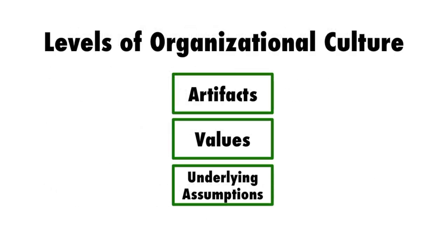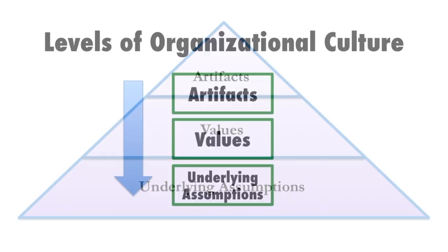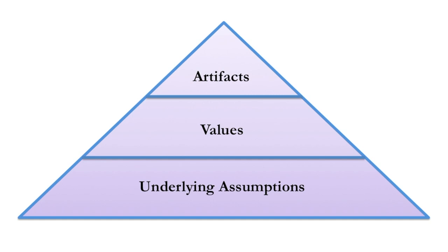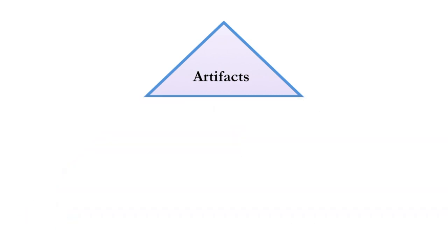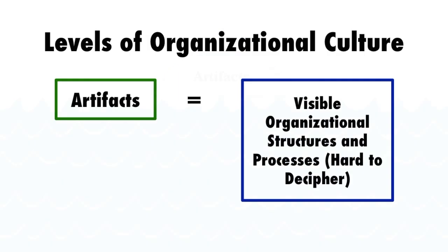The levels of culture are really the part that most people come away with from this article, because it's relatively visual and very concrete. Schein talks about how artifacts rest upon values, which rest upon underlying assumptions, and that it takes a lot of time to understand the different levels of one's own organizational culture. It's helpful to think of this as a pyramid, where the artifacts are just the tip of the iceberg — the most visible part.